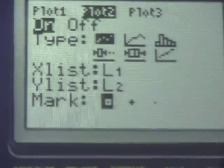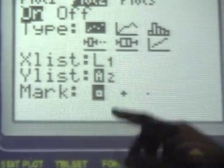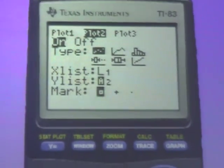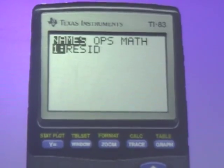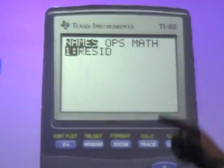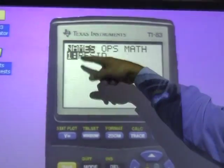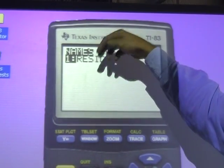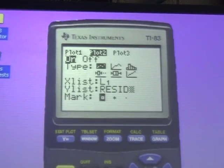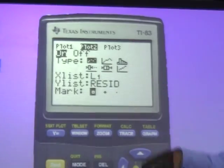L1, but now I want to put in residuals. How do I find residuals? Well, it's entered under list. List is right above stat, so I'm going to go second, list, resid. It's my first one. I'm just going to hit enter. And it might be seventh on your list, or 12. You've got to scroll down and hit enter.